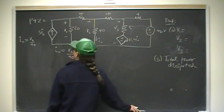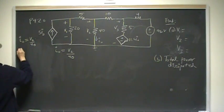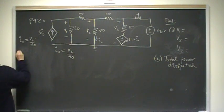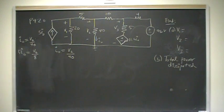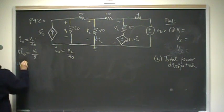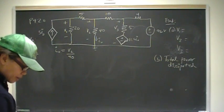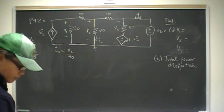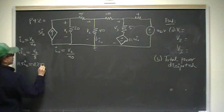I'm going to rewrite the dependent sources in terms of I₀. That current source is really 5 times I₀, which is V2 over 40. 5 into 40 is 8, so 5I₀ is really one-eighth V2. The other one, 11.5 times I₀, is going to be 11.5 divided by 40.